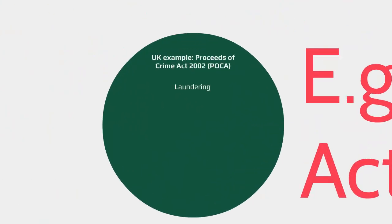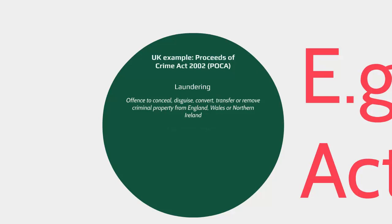The first offence is laundering. It is an offence to conceal, disguise, convert, transfer, or remove criminal property from England, Wales, Scotland, or Northern Ireland. If someone is found to have done so, they could be liable for 14 years in imprisonment.